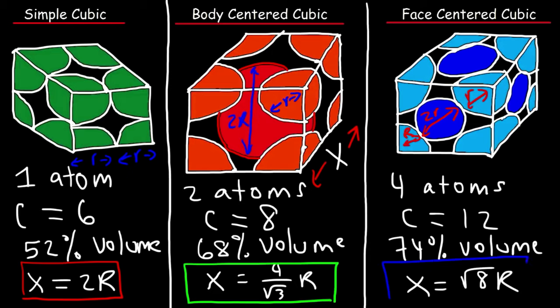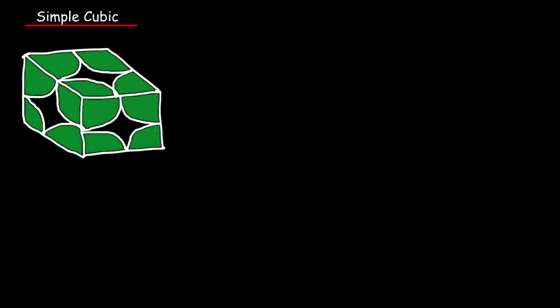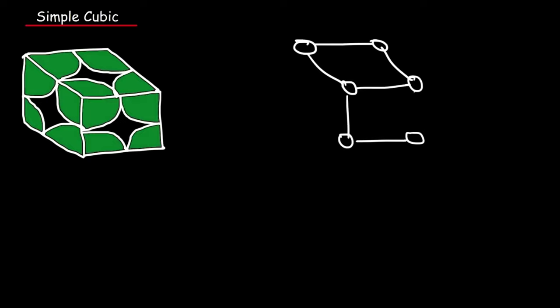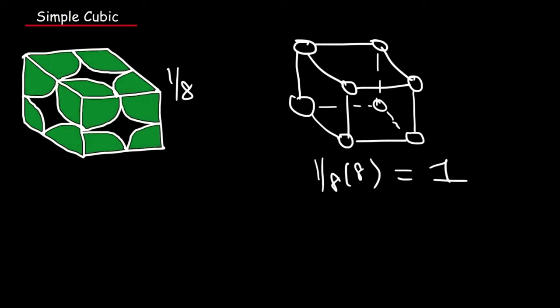You may want to write this information down if you have a test on this. Now let's focus on the simple cubic structure in detail. We said there's one atom per unit cell. In a simple cubic structure there are eight atoms at the corners of the cube, but each corner atom is one-eighth of an atom. One-eighth times eight equals one, which is why there's only one atom per unit cell.